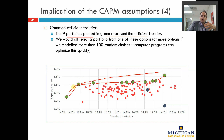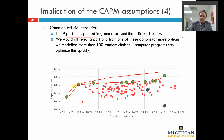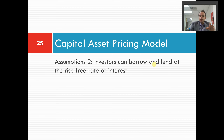We're pretending at the moment that this is the whole investment opportunity set. To get to the capital asset pricing model, we introduce another important assumption: the risk-free rate of interest. Under the previous analysis, depending on our risk preference, we hold different portfolios. Once we introduce the idea that all investors can borrow and lend at the risk-free rate of interest, we're going to end up all holding the same risky portfolio.